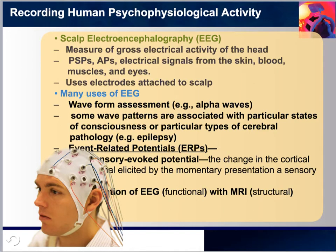Scalp electroencephalography (EEG) is a measure of brain activity through the scalp. The scalp EEG signals reflect the sum of electrical events throughout the head, including action potentials and postsynaptic potentials, as well as electrical signals from the skin, muscles, blood, and eyes. Thus, the utility of the scalp EEG does not lie in its ability to provide an unclouded view of neural activity. Its value as a research and diagnostic tool rests on the fact that some EEG waveforms are associated with particular states of consciousness or particular types of cerebral pathology.